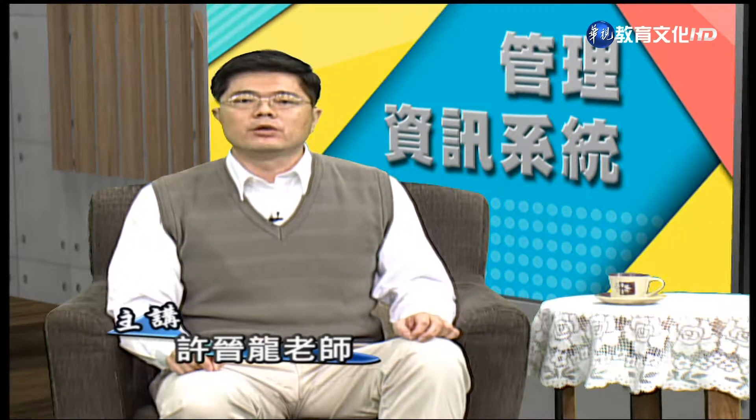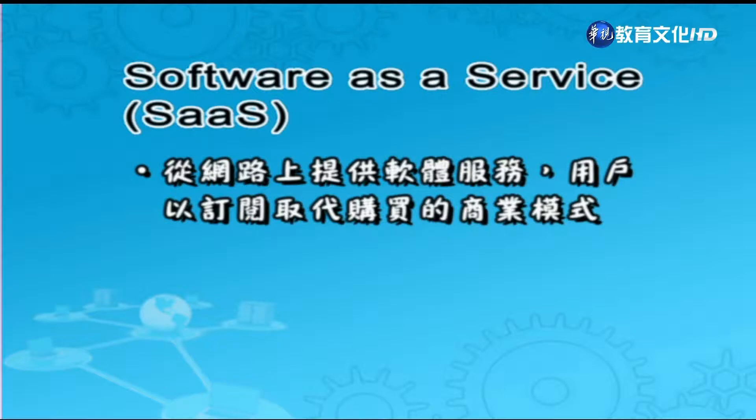SaaS是指顧客可以使用提供者架構在雲端上的應用系統。通常顧客不需要管理或控制雲端上架構的網路、作業系統、伺服器以及儲存設備，只要使用簡單的client端裝置，透過瀏覽器就可以存取雲端上的應用服務。其特點是從網路上提供軟體服務，用戶可以用訂閱來取代購買的商業模式；將商業軟體host在資料中心，以網路存取方式提供服務。